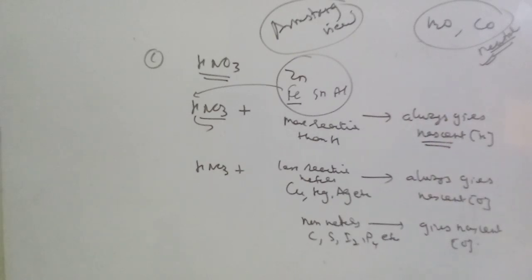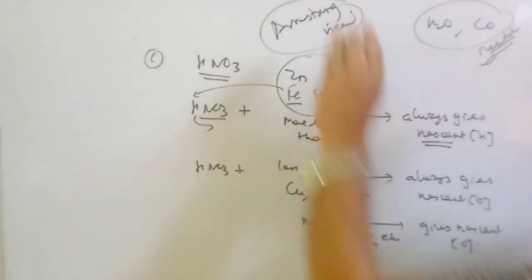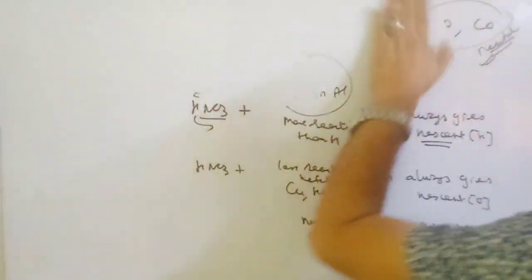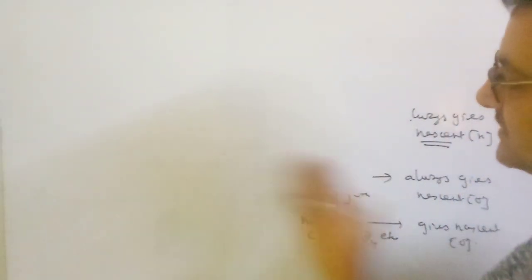Therefore, you must know these three concepts before going to solve by the partial equations method: the first concept is the criteria of product formation — what kind of product is formed; next is nature of oxides; and number three is whether nascent hydrogen or nascent oxygen is produced. If you have these three concepts, you can easily balance the chemical reaction by partial equations method.